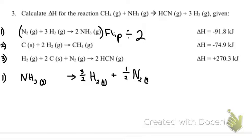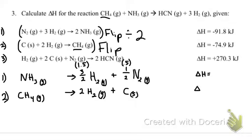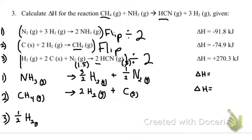Now I'm using fractions — you could just as easily use decimals. Three halves, if you punch it into your calculator, is 1.5; one half is 0.5, so whichever you prefer. We'll change the delta H accordingly. Reaction two: I want methane on the reactant side, but right now methane is on the product side, so I have to flip that reaction. Lastly, I want HCN on the product side, and I have HCN on the product side as well. The only problem is I have two HCNs in this bottom equation, but my ideal equation only calls for one, so I need to divide that equation by two and rewrite it down below.